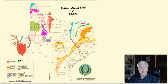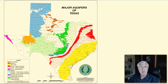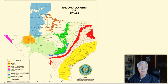Aquifers are an important source of water for humans, supplying about 60% of the water we use. Most of the water pumped from aquifers goes to agriculture to irrigate food crops. Over 80% of the irrigation water used in Texas comes from one aquifer — the Ogallala.